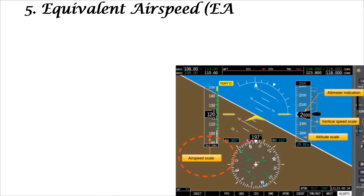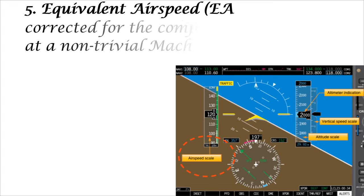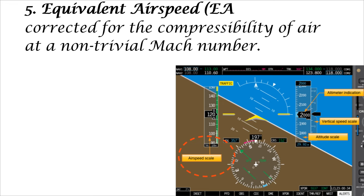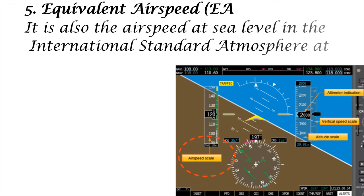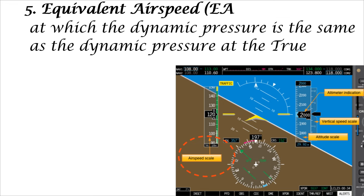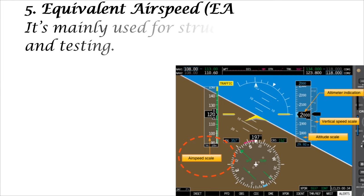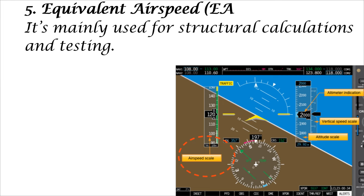Five: Equivalent Air Speed, EAS. Equivalent Air Speed is Calibrated Air Speed, CAS, corrected for the compressibility of air at a non-trivial Mach number. It is also the airspeed at sea level in the international standard atmosphere at which the dynamic pressure is the same as the dynamic pressure at the True Air Speed and altitude at which the aircraft is flying. It is mainly used for structural calculations and testing.